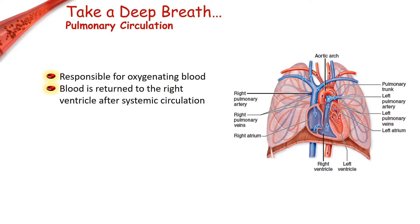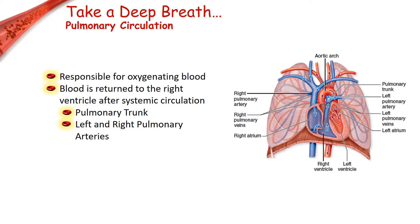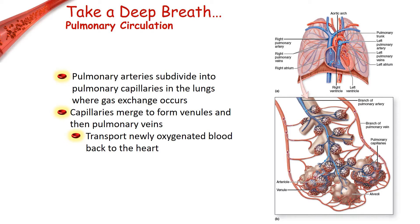Pulmonary circulation is responsible for transporting deoxygenated blood from the right side of the heart to the lungs and then returning the newly oxygenated blood to the left side of the heart. At the end of the systemic cycle, blood low in oxygen enters the right ventricle of the heart and is then sent into the pulmonary trunk, which divides into the left pulmonary artery and the right pulmonary artery that go to the respective lungs. In the lungs, the pulmonary arteries divide into smaller arteries and eventually arterioles. These arterioles branch into pulmonary capillaries where gas exchange occurs. The alveoli in the lungs remove carbon dioxide and replace it with oxygen. The pulmonary capillaries merge to form venules and then the pulmonary veins, transporting the newly oxygenated blood to the left atrium of the heart, where our journey started.